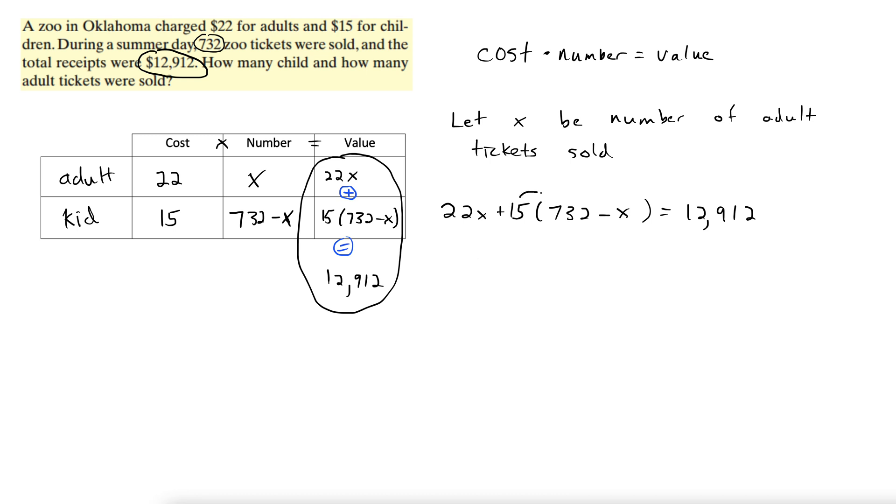Let's distribute this 15 through. We get 22x plus, let's see, 15 times 732, need a calculator for that. I got 10,980 minus 15x, equals 12,912. Combine like terms here, 22x minus 15x gives us 7x.